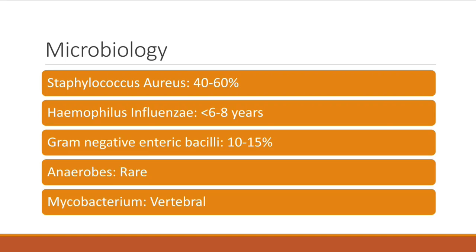Staphylococcus aureus is always the most common causative organism. In children, Haemophilus influenzae is also common. Gram-negative organisms can cause vertebral osteomyelitis, especially with a source like the prostate or UTIs. Anaerobes are rare but can happen. Mycobacterium tuberculosis loves the spine and should not be forgotten — it can coexist with bacterial infections like Staphylococcus aureus.